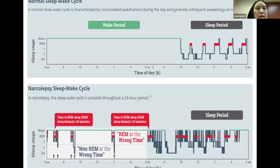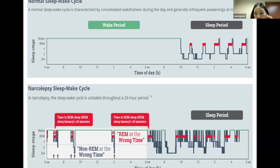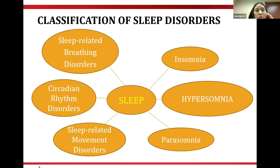A normal sleep-wake cycle is characterized by consolidated wakefulness during the day and generally infrequent awakenings at night. In narcolepsy, the sleep-wake cycle is not stable throughout the 24-hour period, whether daytime or nighttime.